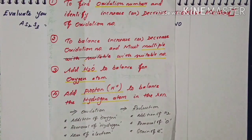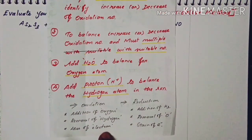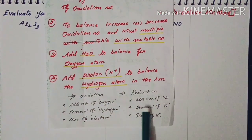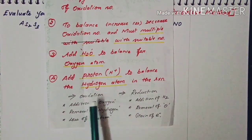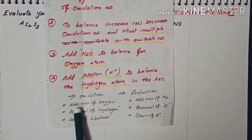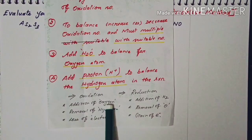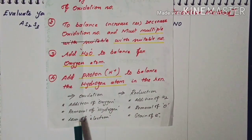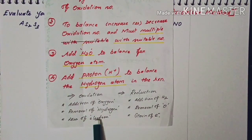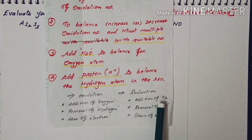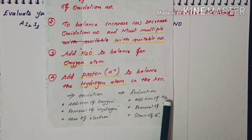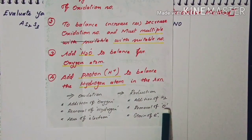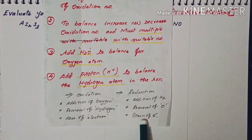One more thing we should remember: what is oxidation and what is reduction? Oxidation is the addition of oxygen, removal of hydrogen, or loss of electrons. Reduction is the addition of hydrogen, removal of oxygen, or gain of electrons.